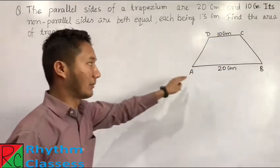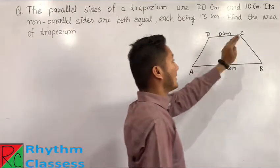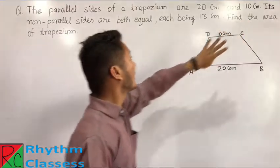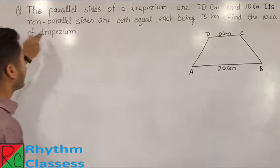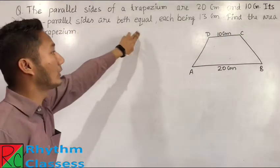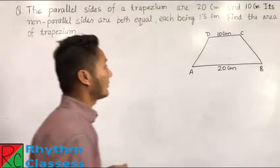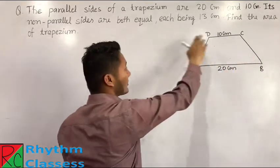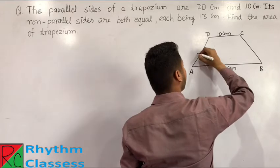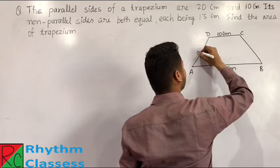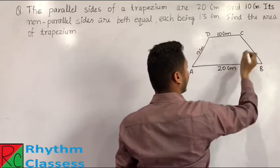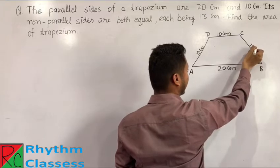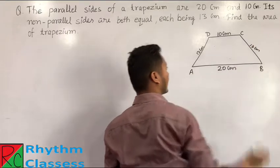In this trapezium, AB is equal to 20 cm and DC is equal to 10 cm. The question says its non-parallel sides are both equal, and each being 13 cm — so AD is 13 cm and BC is also 13 cm.